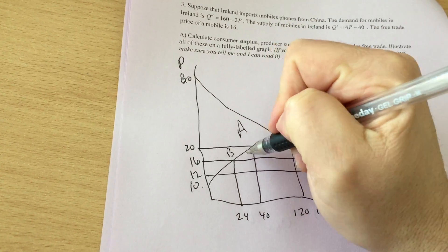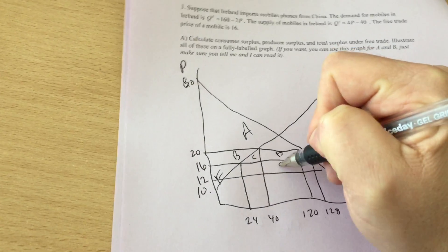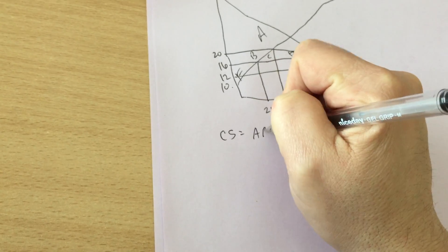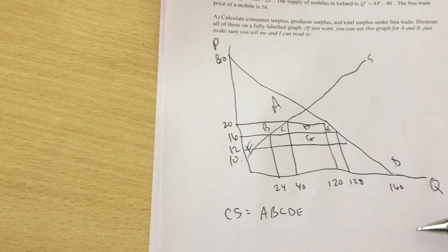So area A, B, C, D, E, F, and G. So free trade consumer surplus is A, B, C, D, E. Everything above the price consumers get below the demand curve.